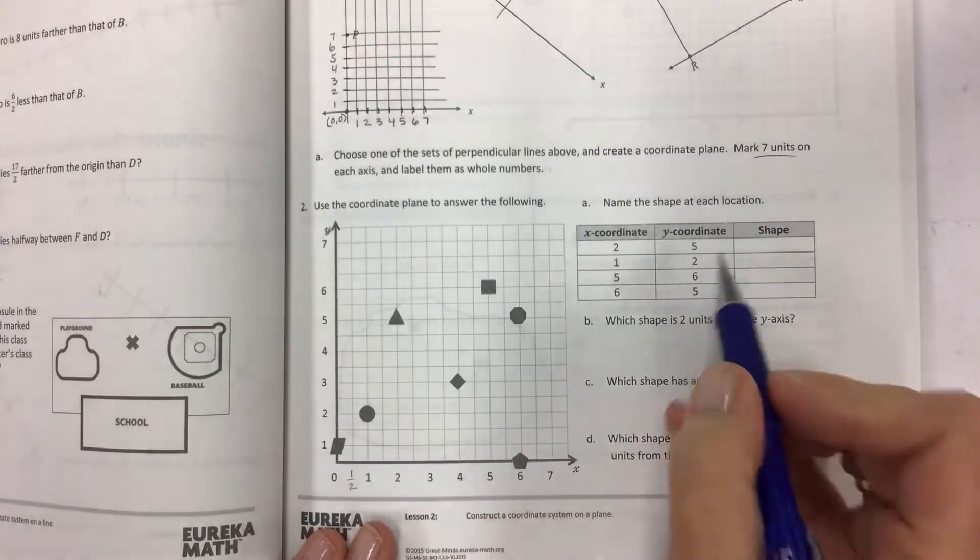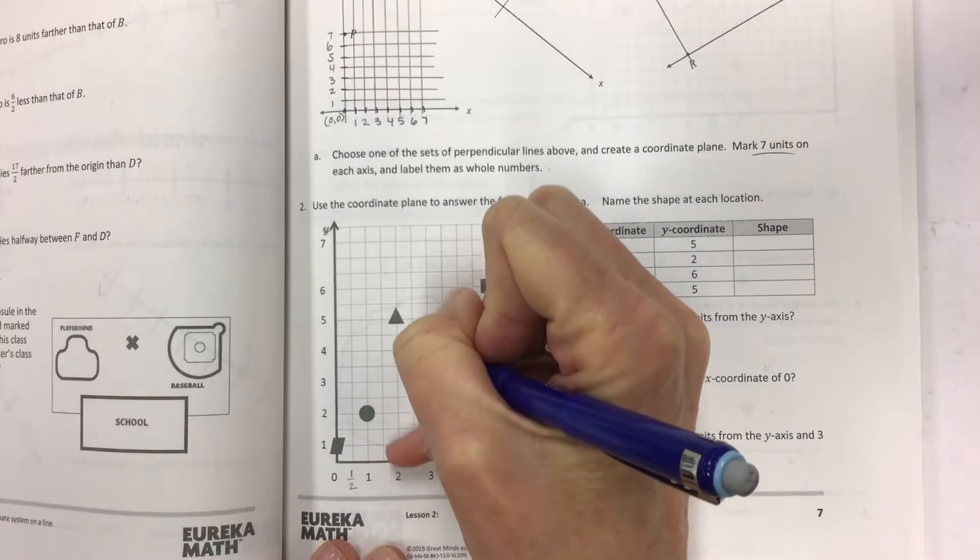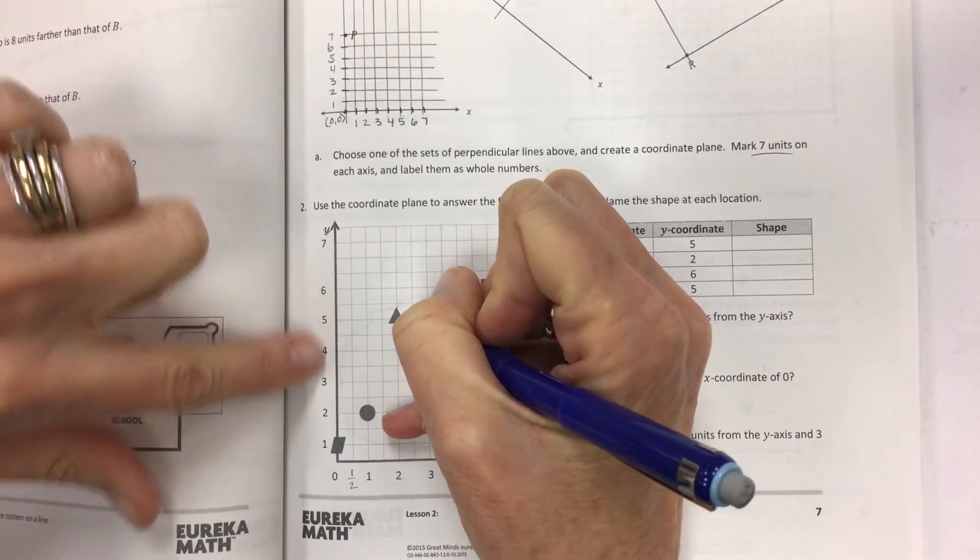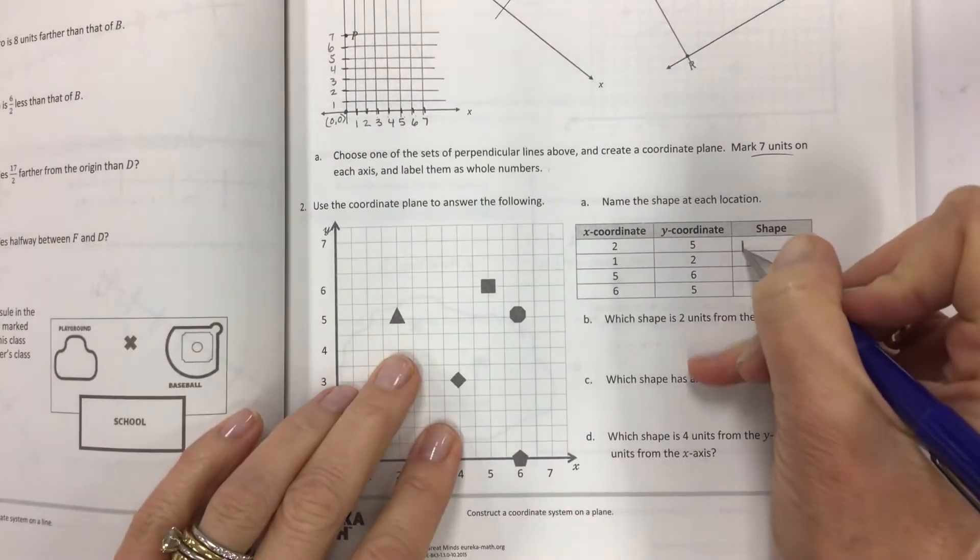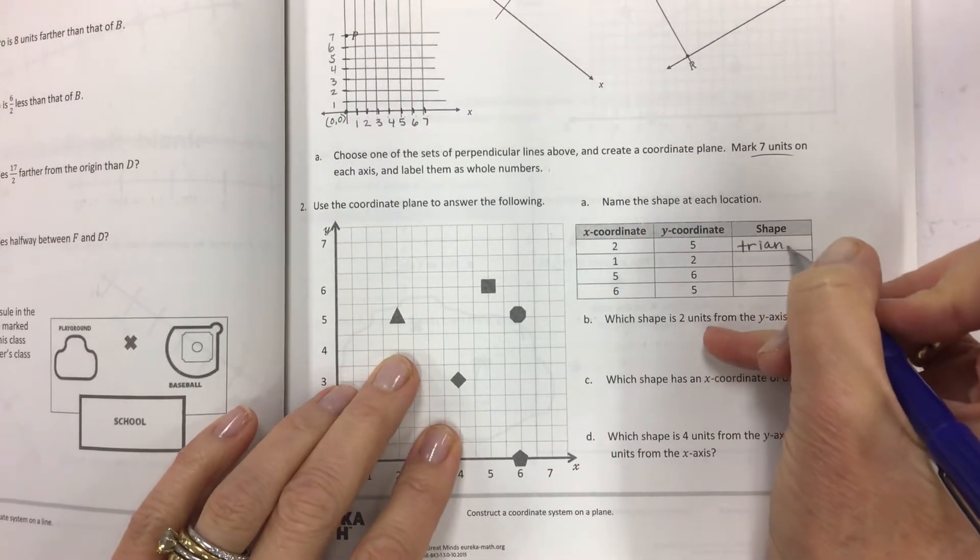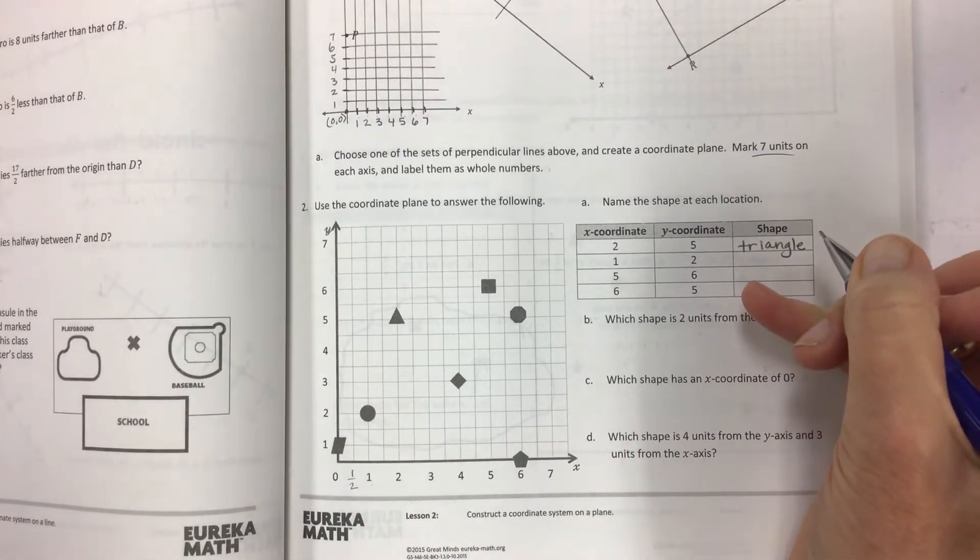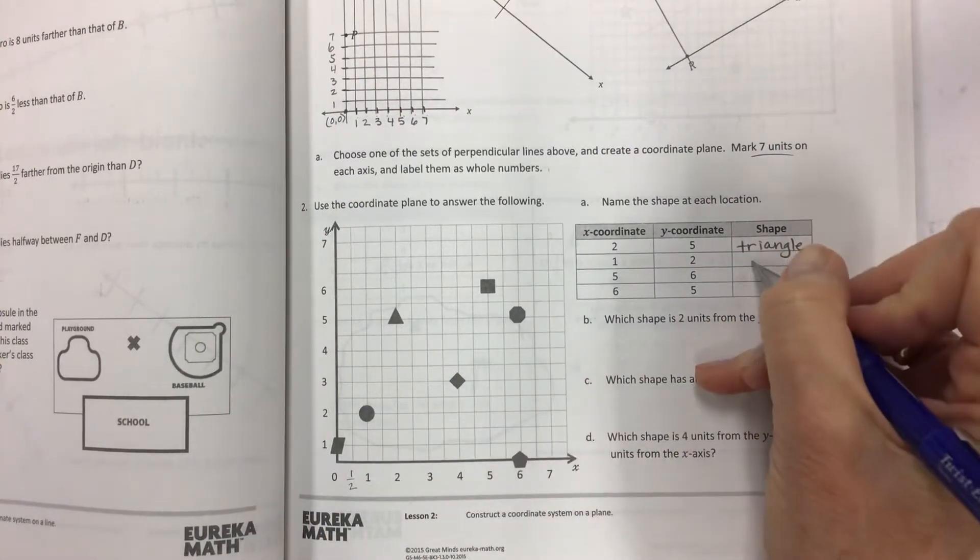X is two, y is five. Find the two, go up that line, double check. It really helps if you can use two hands or a pencil or something, and then mark the shape. And next one. One and two. One, two, circle.